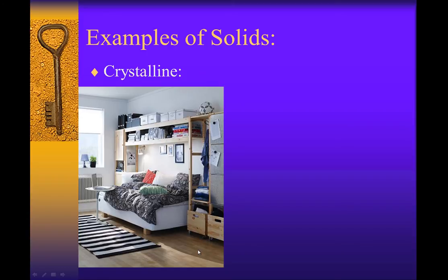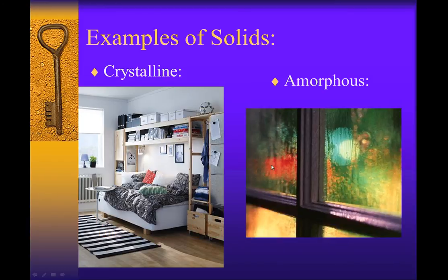Your amorphous solids are your windows. If you've ever seen old buildings and it looks like the windows are sagging, like if you go to Savannah you'll notice it seems like they're drooping a little bit—the glass themselves, that's an amorphous solid. The tar for roads, that's an amorphous solid.